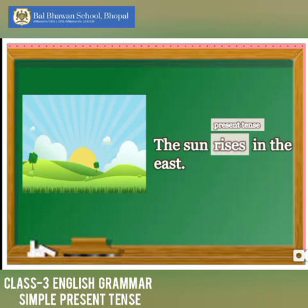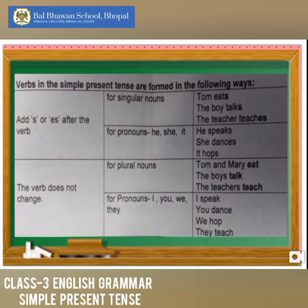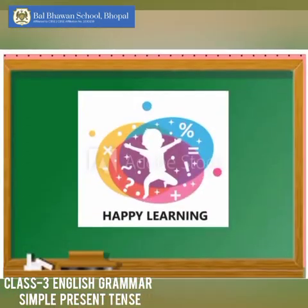Now, children, look at this table. Here, verbs in the simple present tense are formed in the following ways. Don't forget: the simple present tense is used for an action which happens in the present or is done regularly. It is also used to talk about things which remain the same. Now, it's time for the task of the day — write three sentences on what you do nowadays at your home every day. Think and decide carefully which tense should be used. That's all for today. Happy learning!